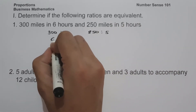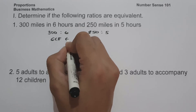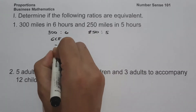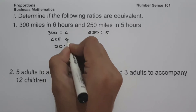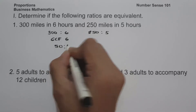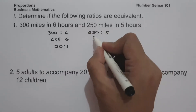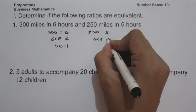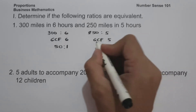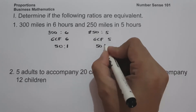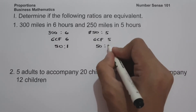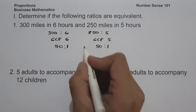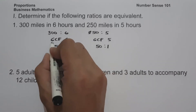The greatest common factor between 300 and 6 is 6. So 300 divided by 6 is 50, and 6 divided by 6 is 1. The greatest common factor between 250 and 5 is 5. So 250 divided by 5 is 50, and 5 divided by 5 is 1. Since we have the same ratio, therefore they are equivalent.